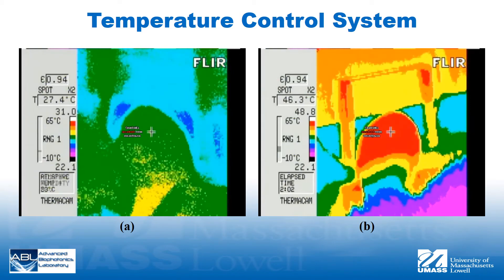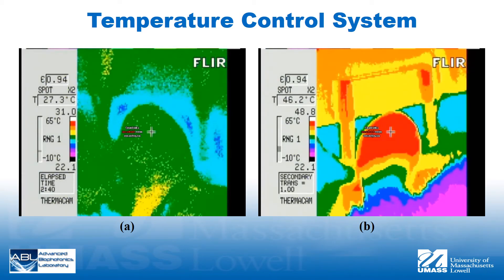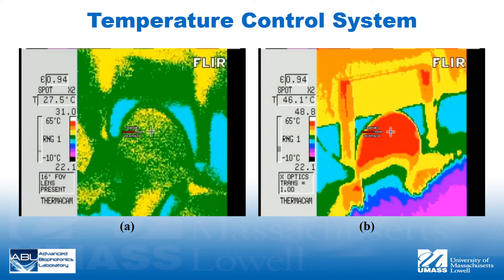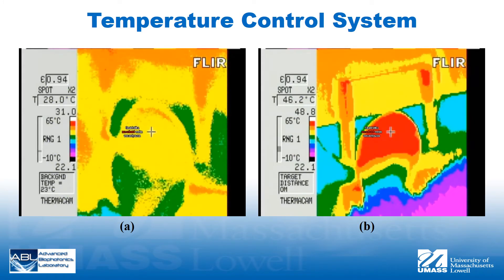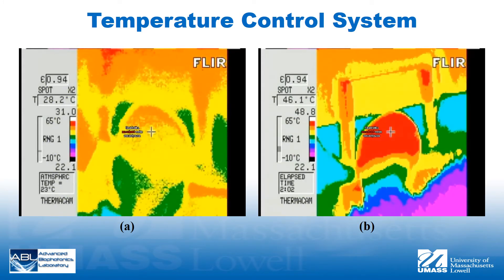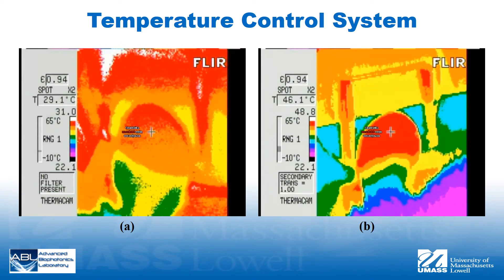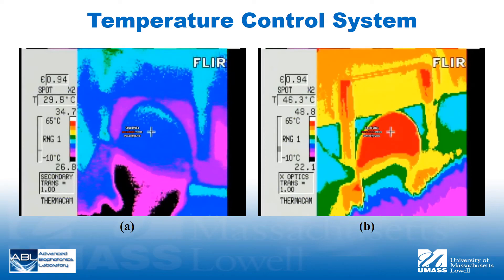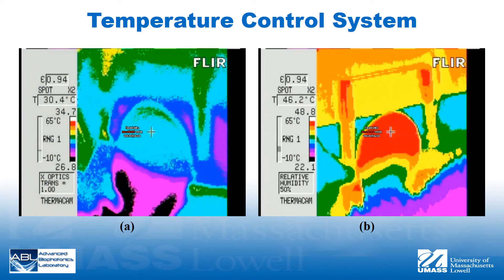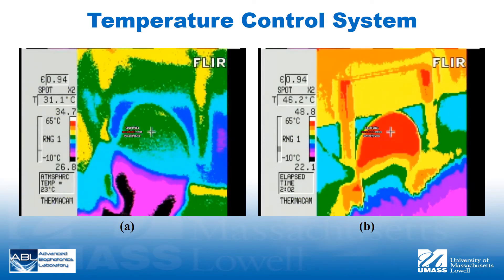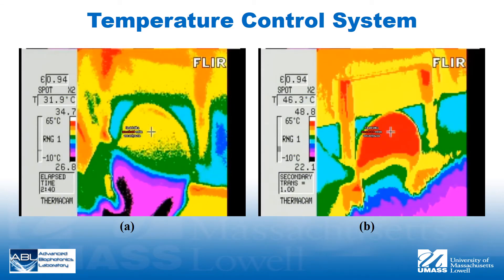Here are sample videos acquired using the thermal camera. The video in panel A shows the temperature distribution in the mouse ear during the heating process, and the video in panel B shows the temperature distribution while the desired temperature was maintained. Desired temperatures were achieved within 30 seconds of heating and maintained within plus or minus 0.1 degrees Celsius.